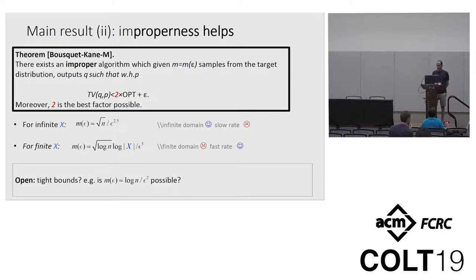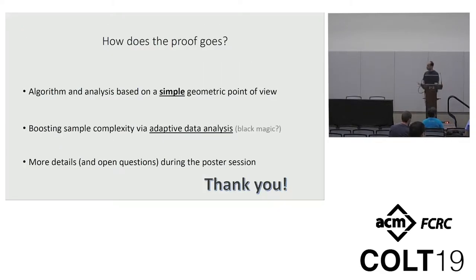Now, as you can see, the sample complexity bounds are kind of strange. The reason is that we use adaptive data analysis. And I conjecture that there should be a simpler analysis of our algorithm that gives you much better sample complexity bounds. So I will not talk about the proof, but you can come to the poster and I will happily discuss it with you. And that's it. Thank you.